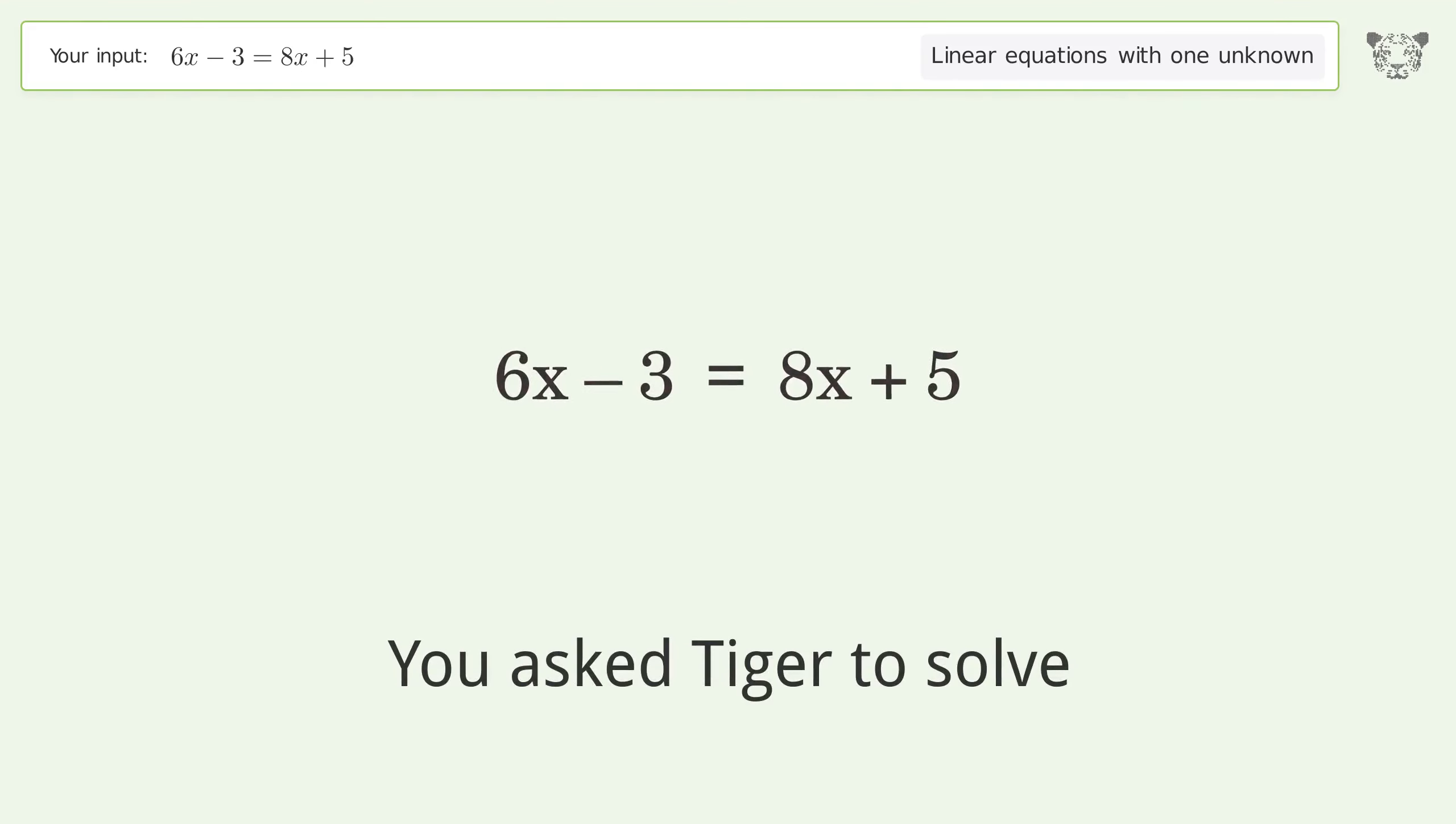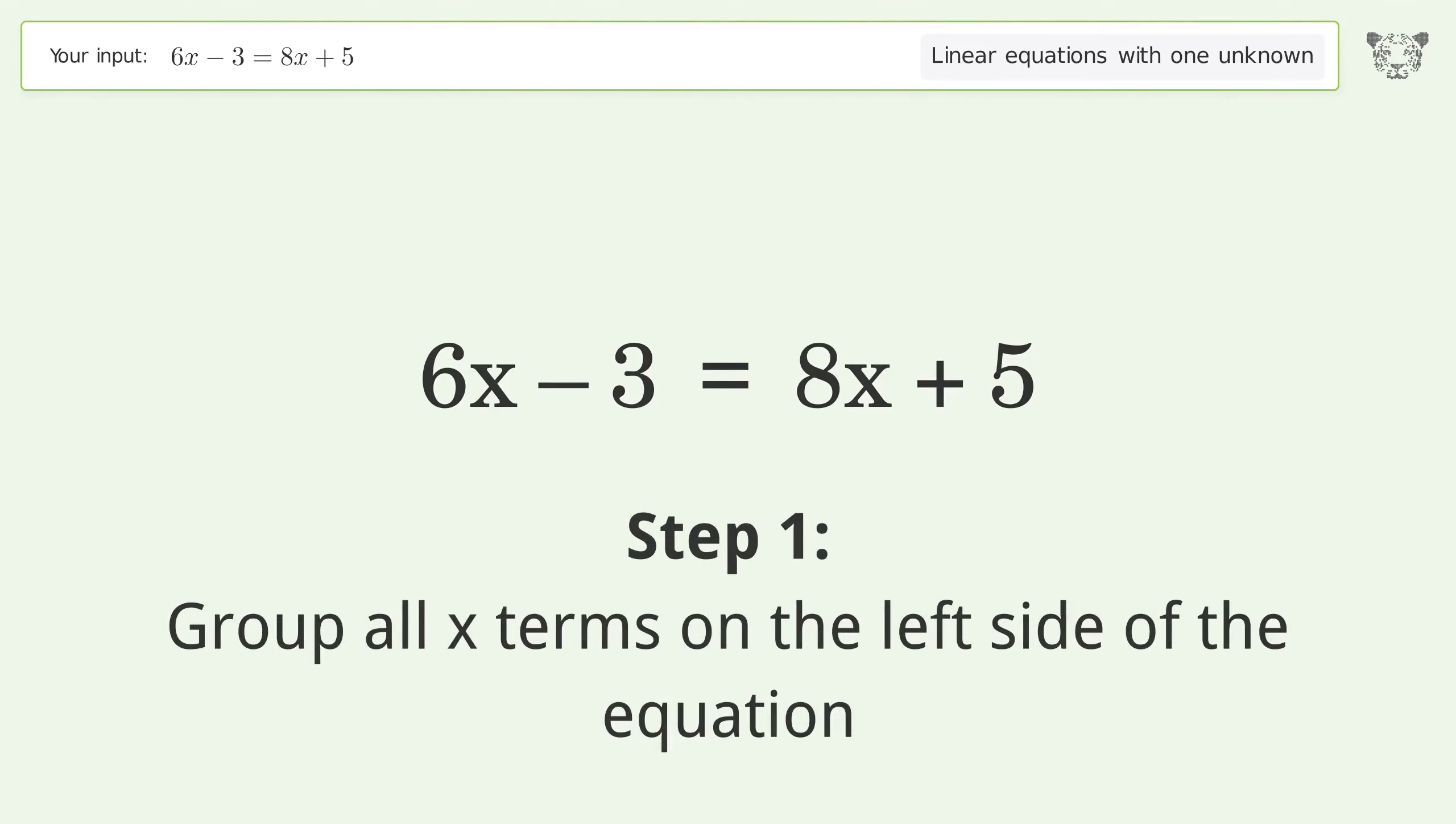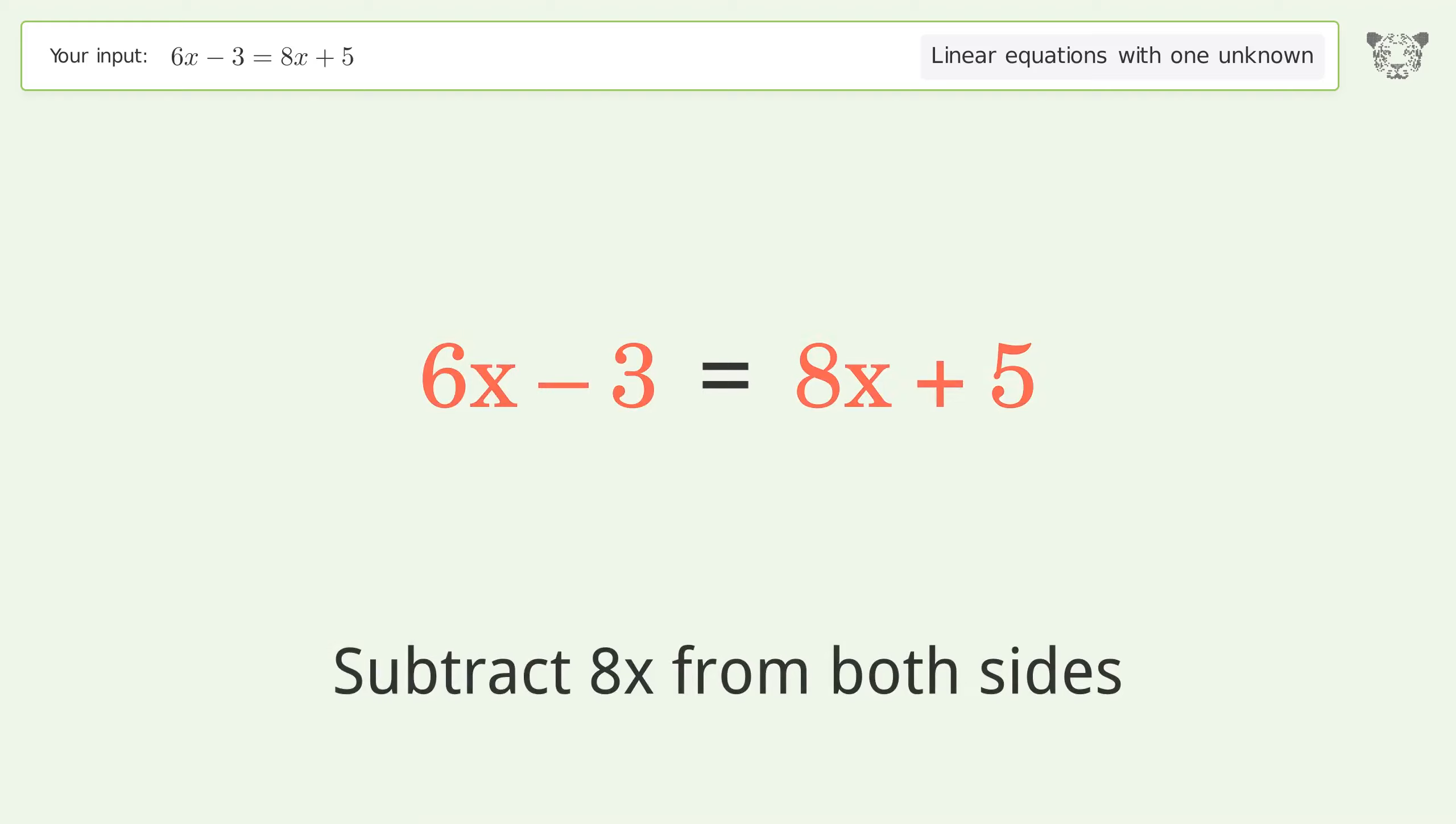You asked Tiger to solve this. This deals with linear equations with one unknown. The final result is x equals negative four. Let's solve it step by step. Group all x terms on the left side of the equation. Subtract 8x from both sides.